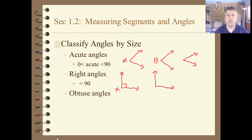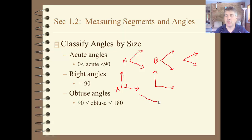Obtuse angles are angles whose measure is more than 90 degrees and less than 180. Something that's a little bit more wide open might be considered an obtuse angle. Angle T here is an obtuse angle — it's more than 90 and less than 180 degrees.